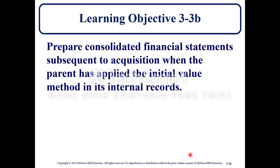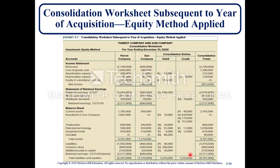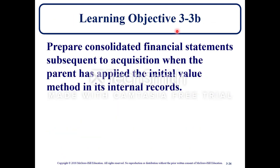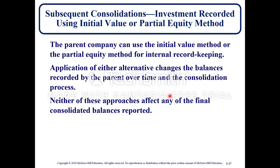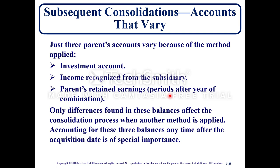Learning objective 3-3B: prepare consolidated financial statements subsequent to the acquisition when the parent has applied the initial value method in its internal records. Under the initial value method: when the parent uses the initial value or partial equity method for internal record keeping, these applications change the balances recorded by the parent over time. Neither approach affects any of the final consolidation balances reported. Only three parent accounts vary because of the method applied: the investment account, the income recognized from the subsidiary, and the parent's retained earnings.